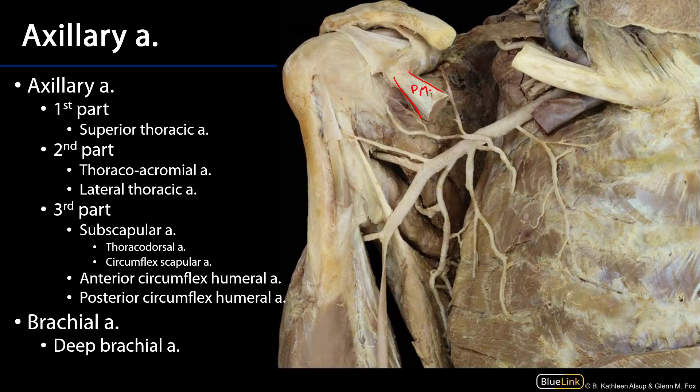The first part of the axillary artery is medial to pectoralis minor and has one branch known as the superior thoracic artery. The superior thoracic artery supplies blood to some of the intercostal spaces of the lateral wall of the thorax.